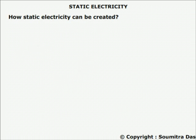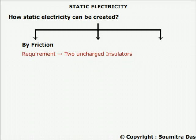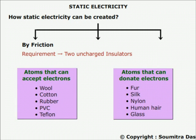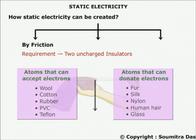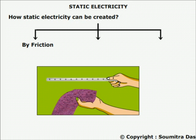Static electricity can be created by three ways. No. 1: By friction. Here the requirement is two uncharged insulators. Insulators are of two types — one type has atoms which can accept electrons while the other type has atoms which can donate electrons. They are listed in a table with the capacity of donating and accepting electrons given in increasing order. When a glass rod is rubbed with wool, the glass rod acquires positive charge and the wool acquires negative charge.